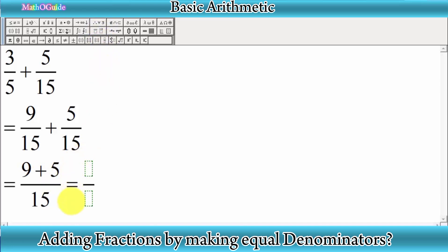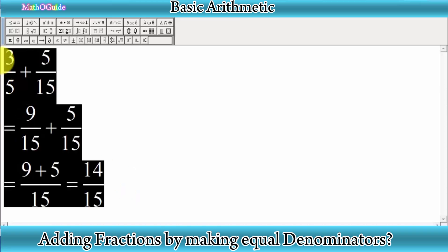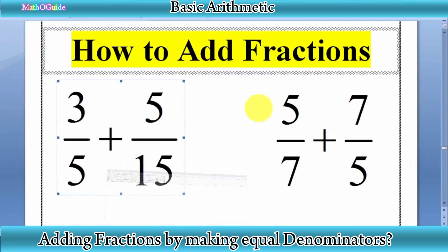14 divided by 15. This is a very simple method. By making denominators equal, you can add fractions. But here we have another type of fraction where we cannot easily make equal denominators. We have 5/7